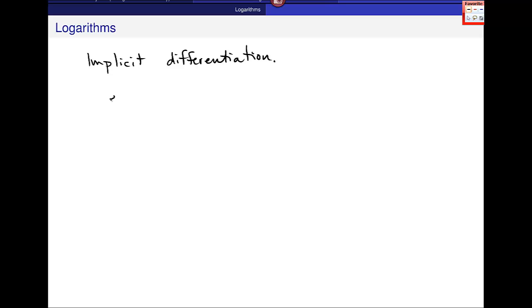I want to work this example problem which is to find y prime using implicit differentiation for this relationship: 4x plus the natural log of (x² times y⁴) equals 10.